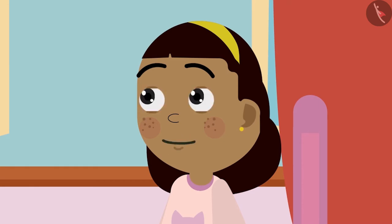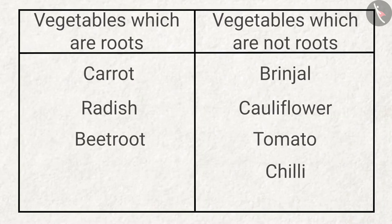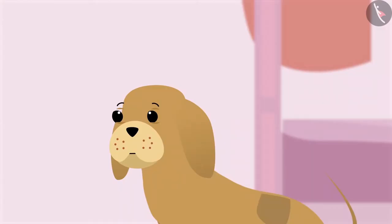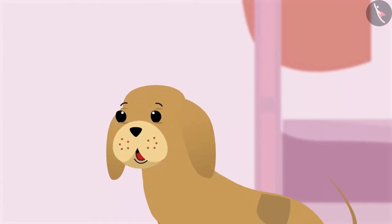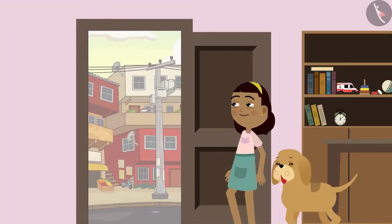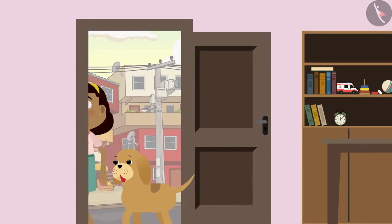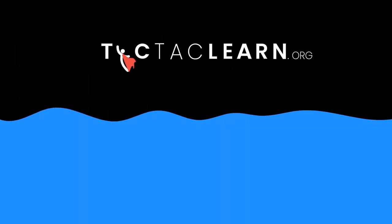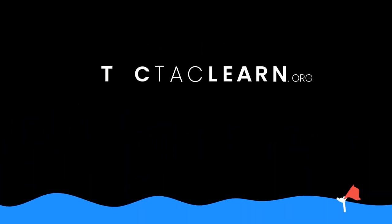Zia says: Mummy, see my table is complete! Mother says: Oh wow Zia, your table looks very good. So will you now come with me and help me fix those plants? Zia replies: Yes mummy! Oh Bobo, let's go and help mummy! Zia and Bobo walk towards the garden. Summary: In this video we learned about the roots of trees.